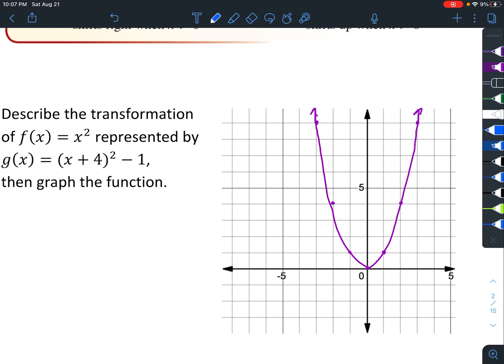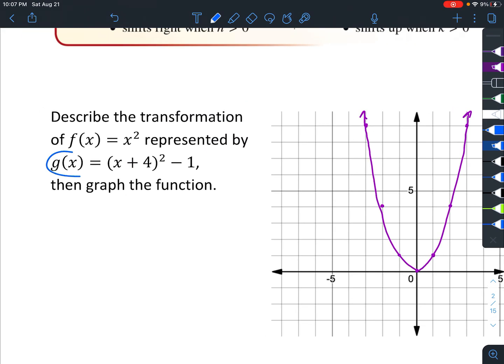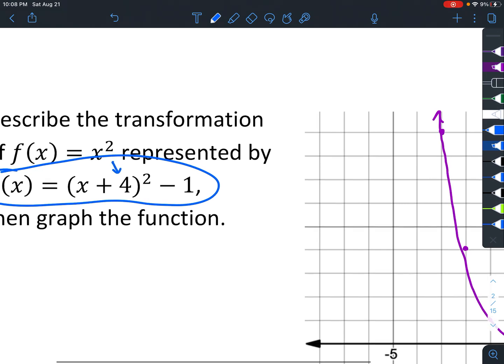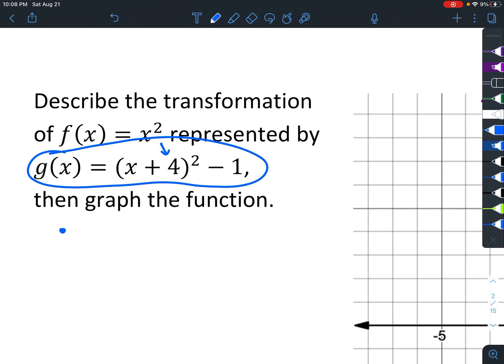Now let's look at what the transformation is. I'm going to highlight it in blue. We notice that it says plus 4, which means left 4, because it's the opposite of what it looks like. And then the minus 1 means the whole thing is going to shift down 1.